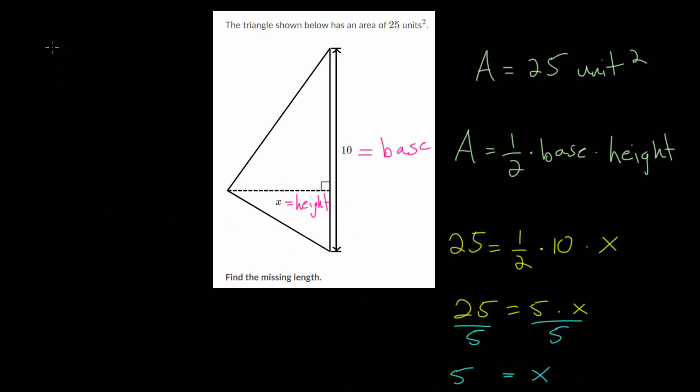We can check this by just plugging everything back into our area formula. We should get back 25. So the area is 1/2 multiplied by the base, which is 10, multiplied by the height, which is 5. We know half of 10 is 5, so we get 5 times 5, which is 25. This does make sense in regards to our area formula.